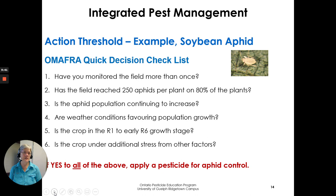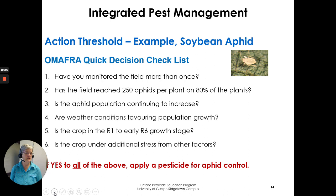Here's an example of an action threshold: soybean aphid. OMAFRA has a decision checklist with six questions: Have you monitored the field more than once? Has the field reached 250 aphids per plant on 80% of the plants? Is the aphid population continuing to increase? Are weather conditions favoring population growth? Is the crop in the R1 to early R6 growth stage? And is the crop under additional stress from other factors? If you can answer yes to all of the above, the recommendation is to apply a pesticide for aphid control.